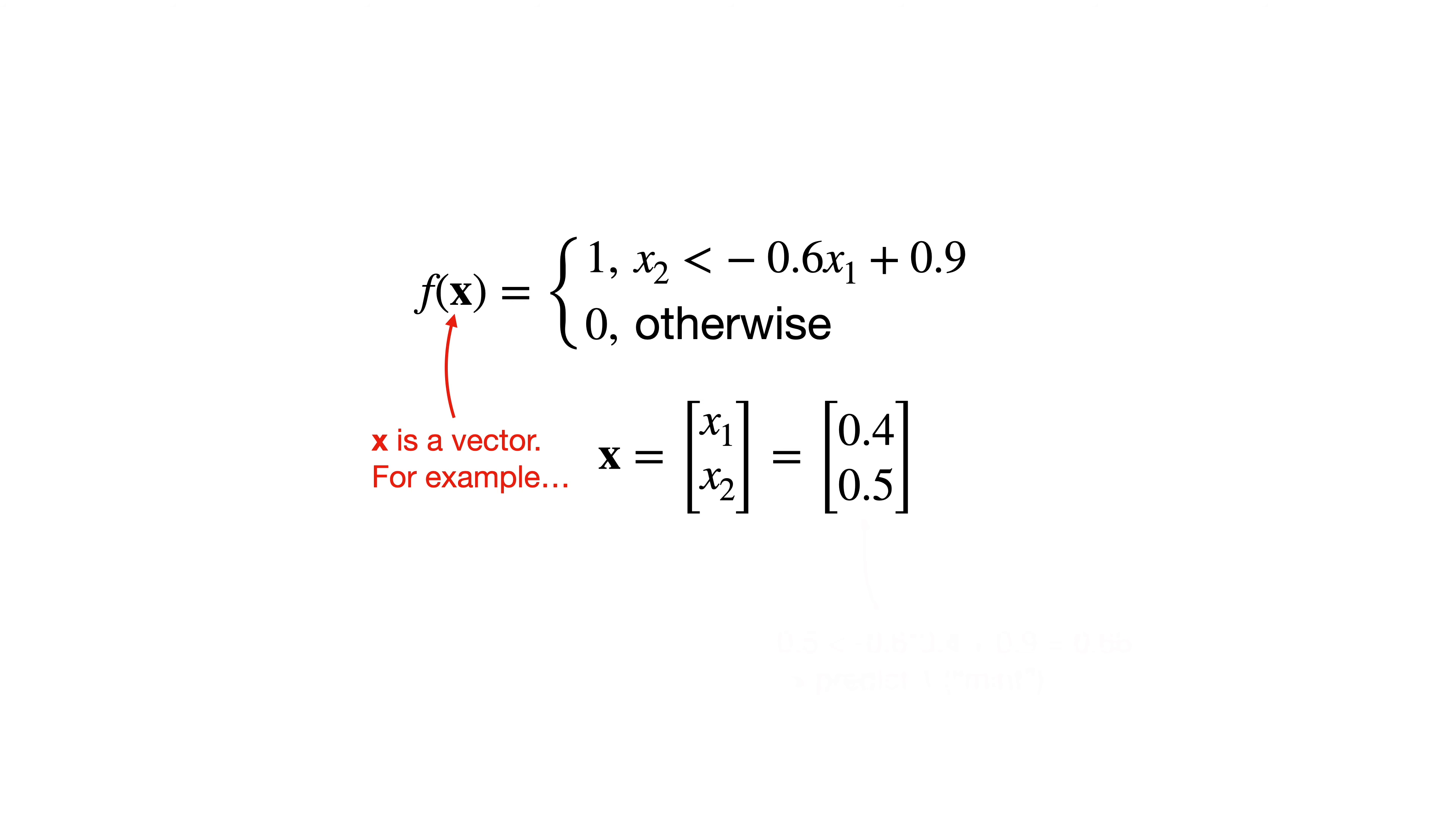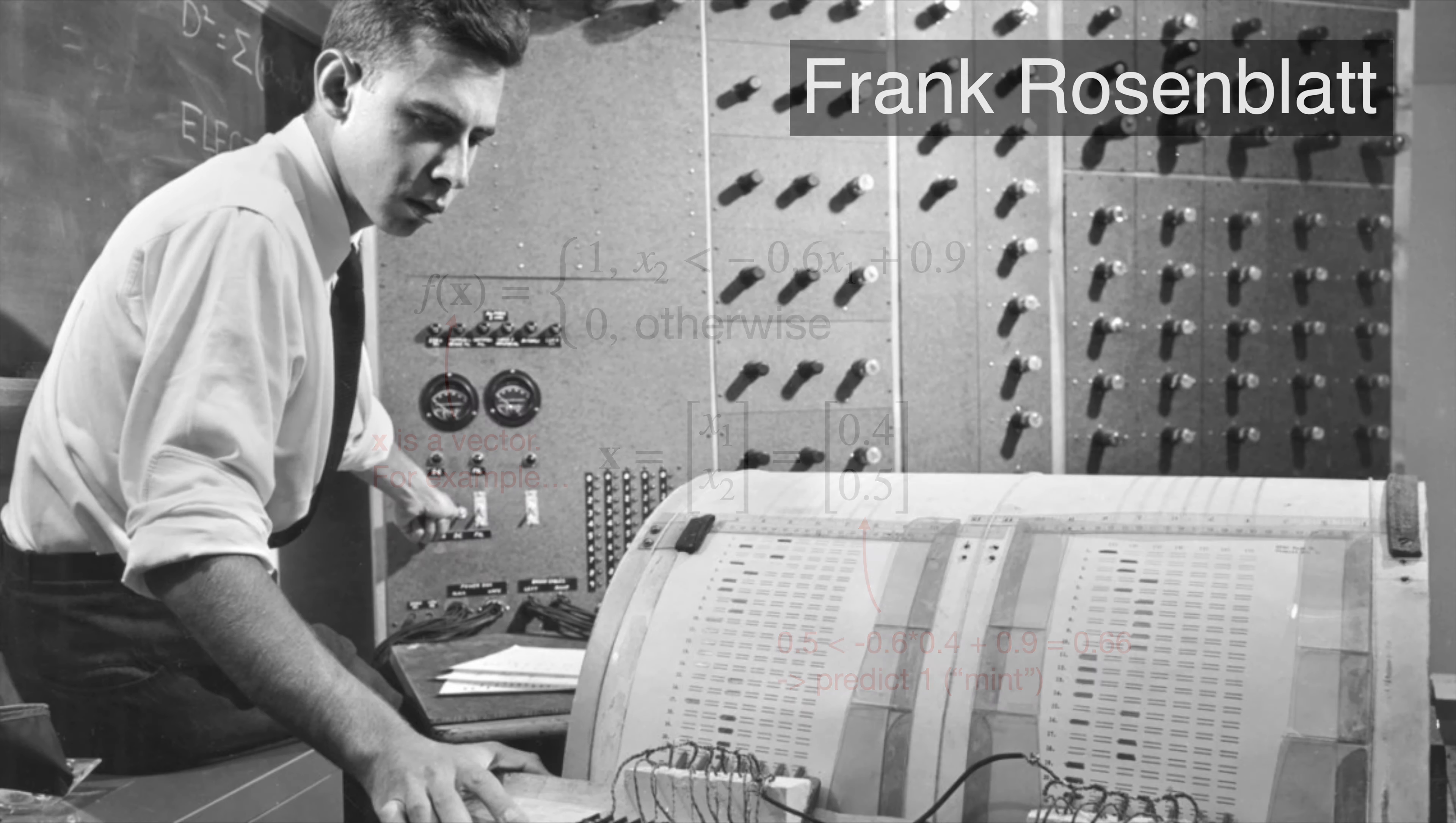So now we can complete our model as f of x equals the piecewise function 1 where x2 is less than negative 0.6 times x1 plus 0.9 and 0 otherwise. Now if I reach into my pocket and discover a new object with size 0.4 and smoothness 0.5, I can do some mental math and ultimately predict that it's a mint. This model, as you may have guessed, is a perceptron created by Frank Rosenblatt back in 1958.